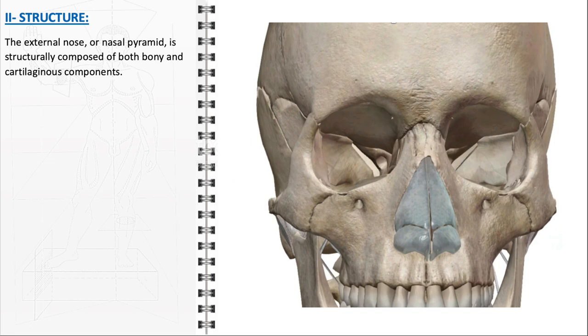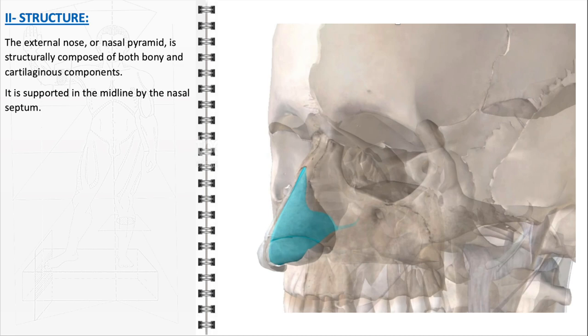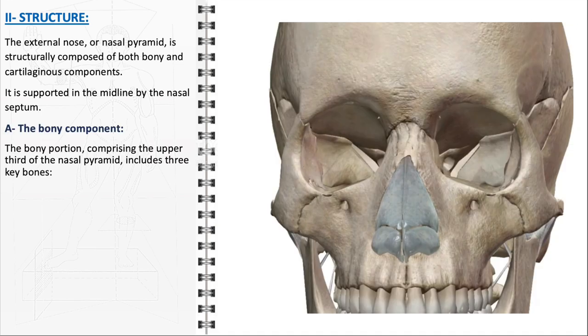The structural integrity of the external nose, or nasal pyramid, is a result of a sophisticated blend of bony and cartilaginous components. Central to its support system is the nasal septum, located in the midline, which is pivotal in maintaining structural integrity and symmetry, dividing the nasal cavity into two separate passageways. The bony component, forming the upper third of the nasal pyramid, comprises three key bones and is crucial for the overall shape and strength of the nose.